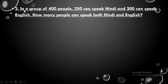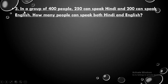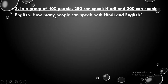The next question doesn't directly tell you whether the number refers to intersection or union — you need to identify that. In a group of 400 people, 250 can speak Hindi and 200 can speak English. When they say 'a group of 400 people,' that means they're talking about union. And how many people can speak both Hindi and English? 'Both' means we need to find the intersection.